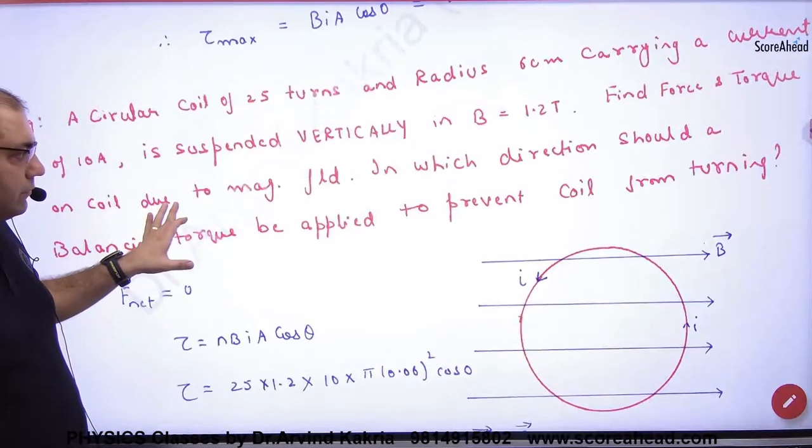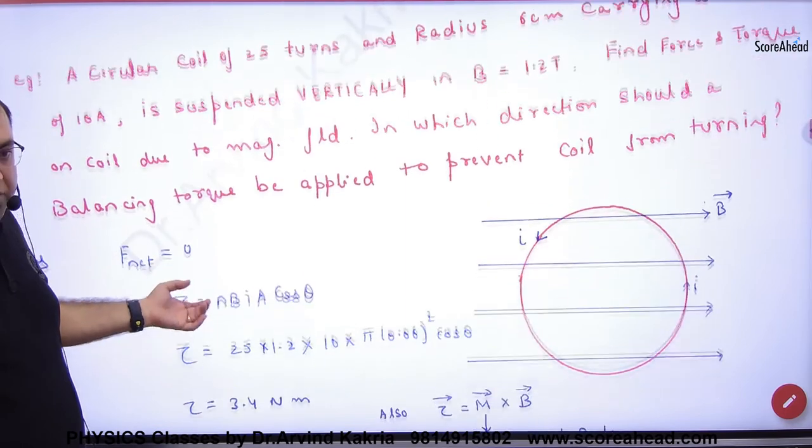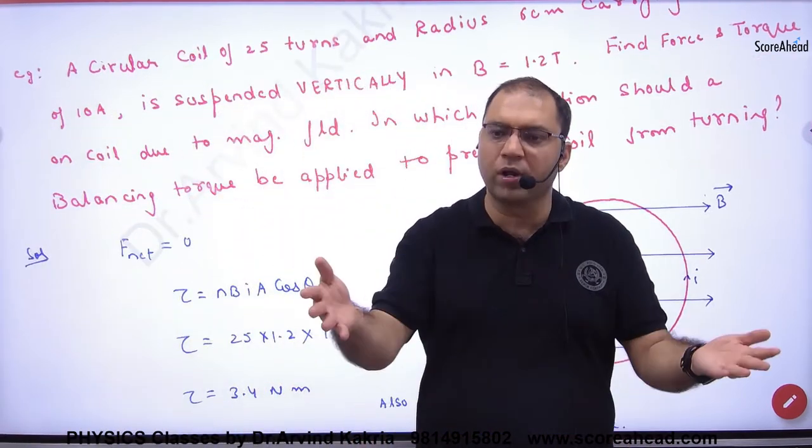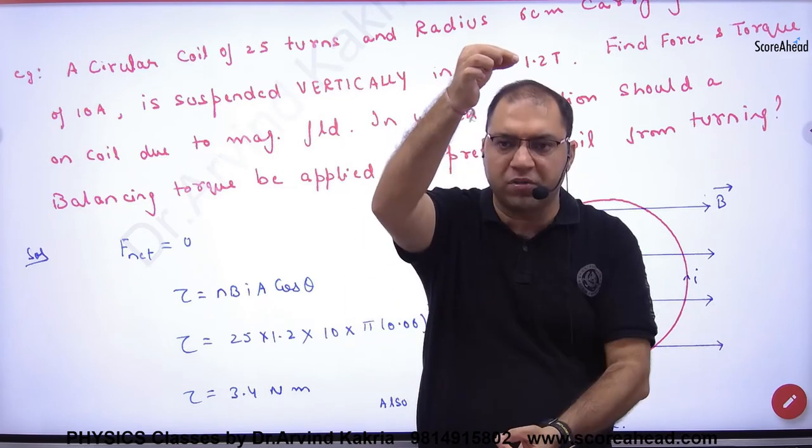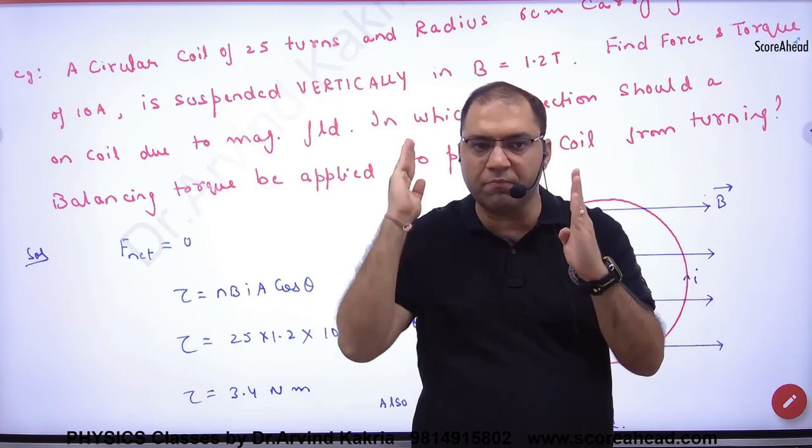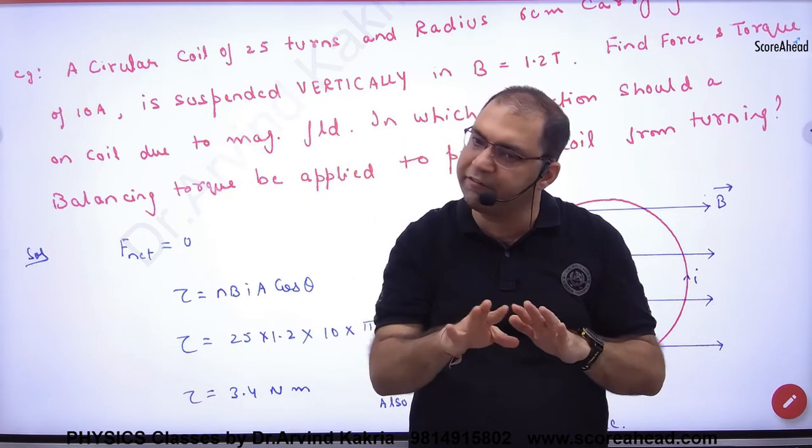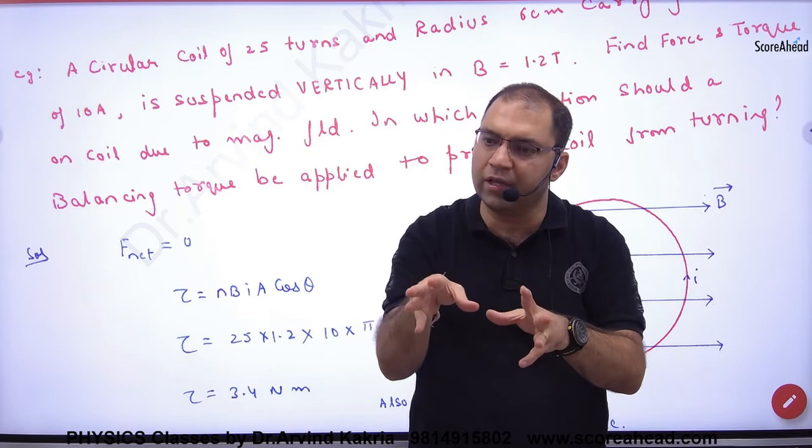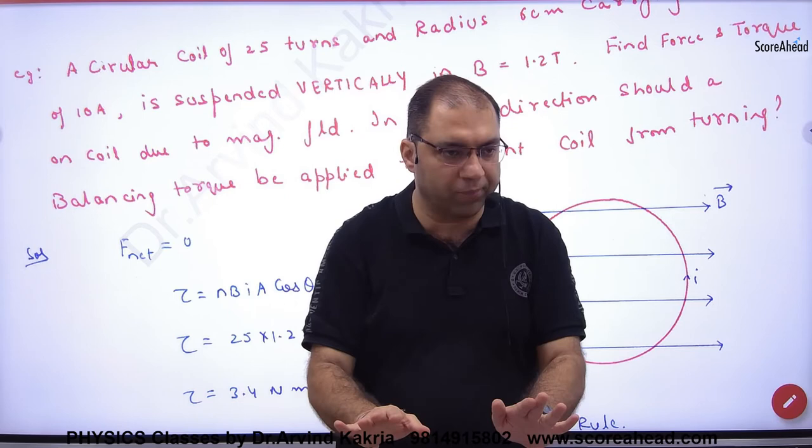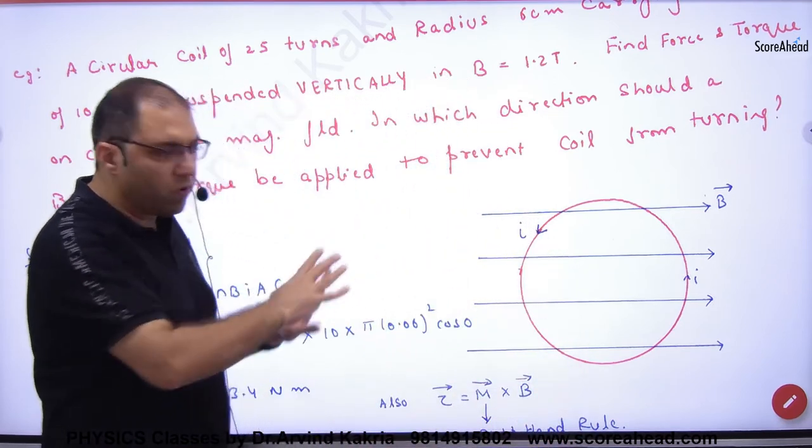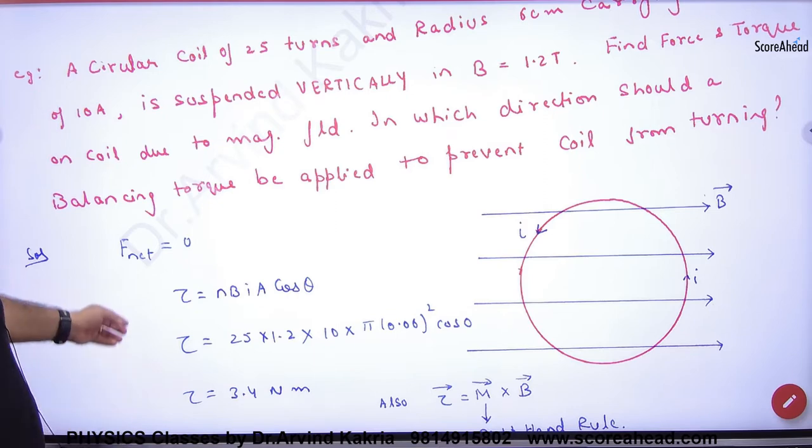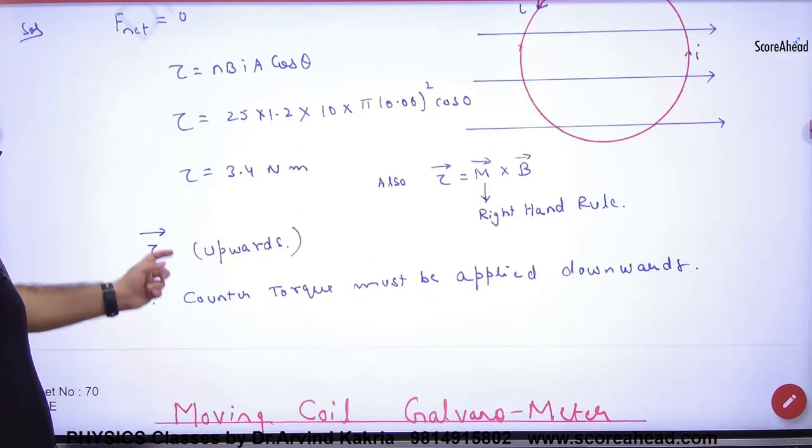What will be net force in it? We have taken the rectangular loop. What was in the theory? The upper and lower forces cancel. Under and outside forces cancel. Net force is zero. Net force zero, but net torque is not zero.